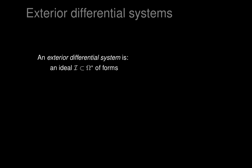If you have some forms and want them to vanish on submanifolds, the submanifolds won't change if you multiply all the forms by three, or add multiples of those forms to others. So we can replace the differential forms by the ideal they generate. An exterior differential system is an ideal of differential forms. If a form vanishes on a submanifold, then its exterior derivative also vanishes, so we can assume our ideal is differentially closed.